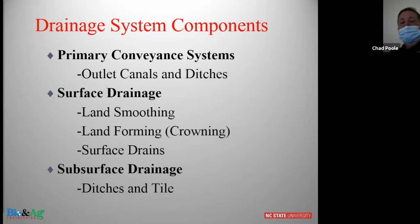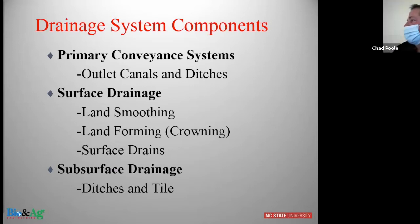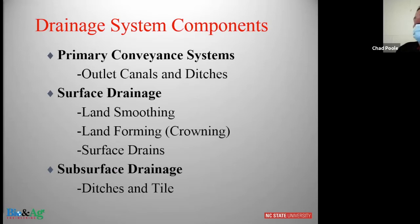I want to talk about definitions so we're all on the same page as we go through this discussion on basic agricultural drainage. The first is our primary conveyance systems — our dredged canals, large canals, and large ditches that have to handle all of this water. Without that infrastructure we would be in serious trouble regardless of what happens in the agricultural fields. That is one of the most critical things that we can maintain at the farm level.